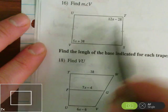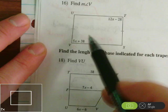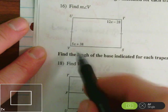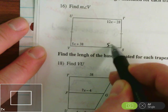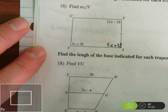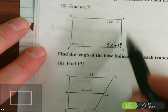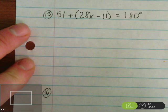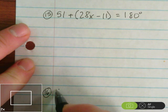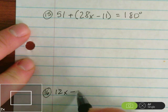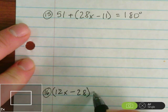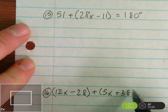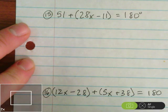Here in 16, we're supposed to find the actual value of V. Notice this isosceles trapezoid. And therefore, V is the same as S. So this is 5x plus 38 as well. And 12x minus 28 plus 5x plus 38 should be 180 because the two angles are at the end of the leg there. So we have 12x minus 28 plus 5x plus 38 equals 180.